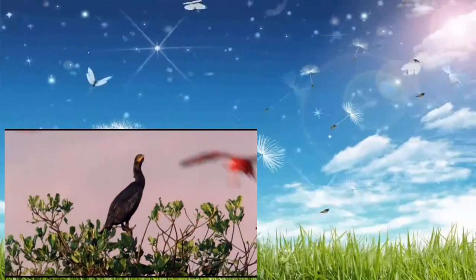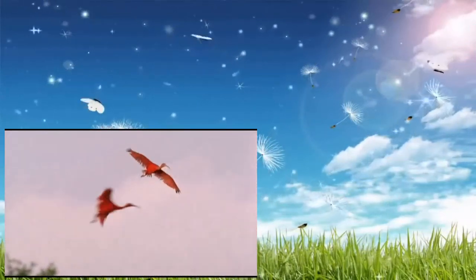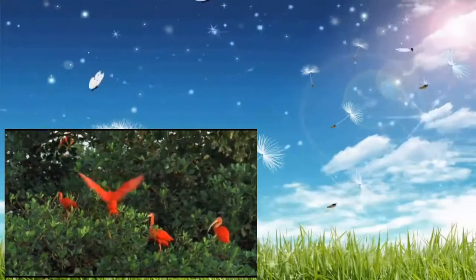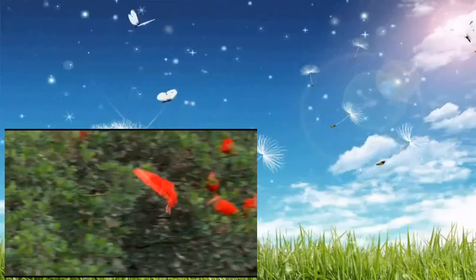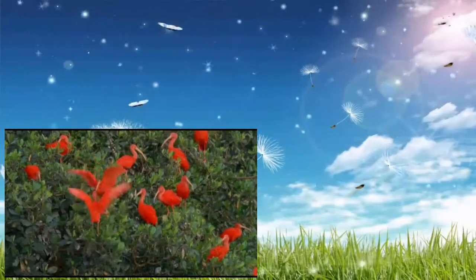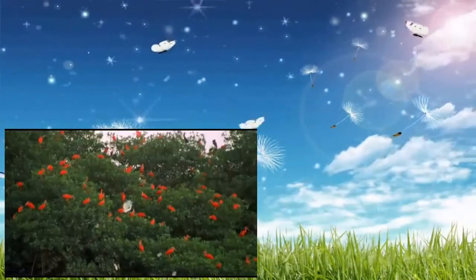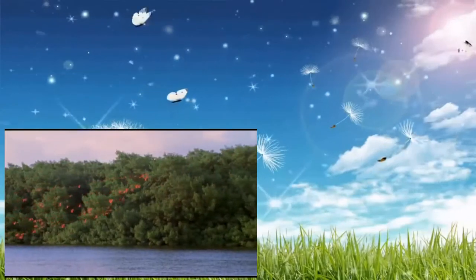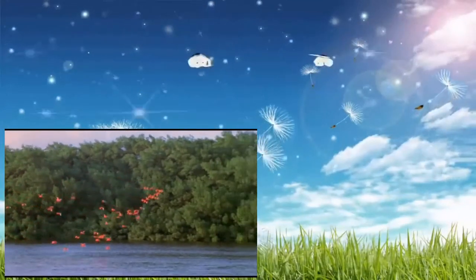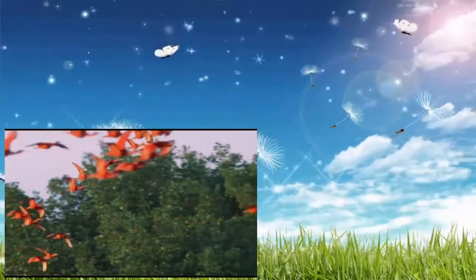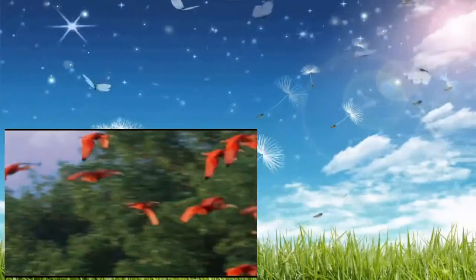Scarlet ibis are found around the deltas of the Amazon and Orinoco rivers, but up to 15,000 also live here in Trinidad's Caroni swamp. And each evening, they return to roost. The ibis cram onto mangrove islets. Safety in numbers is the best way to make it through the night. Scarlet ibis are one of this island's most colorful spectacles.